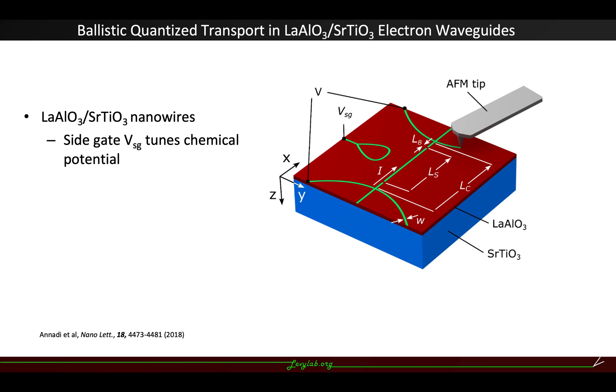With this technique, we have tried many different devices at the interface, and one of them is this nanowire-based electron waveguide structure. Basically, it's a nanowire with two barriers to isolate it from the source and drain from the nanowire segment in the middle.